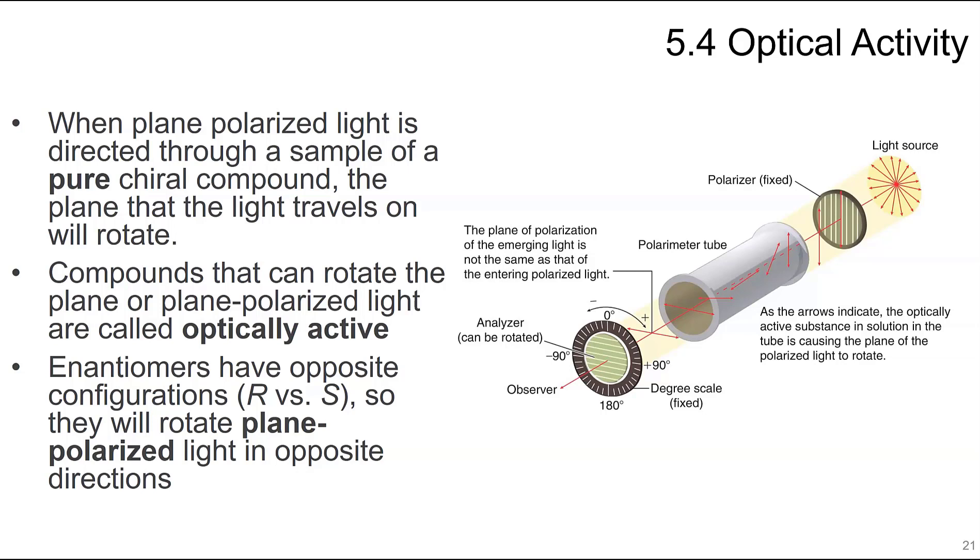Enantiomers have opposite configuration, S versus R, so they will rotate plane polarized light in opposite directions. You can see this scale here. Once it goes through the polarizer, something might go 45 degrees in one way and the other compound will rotate the light 45 degrees in the opposite direction.